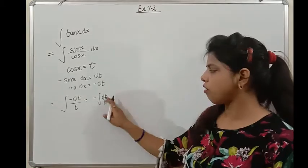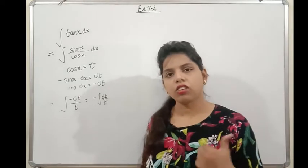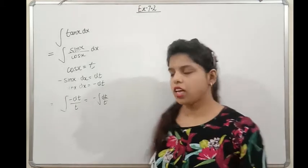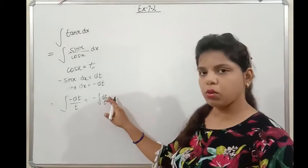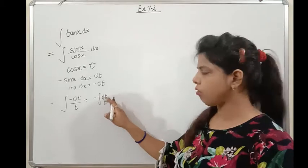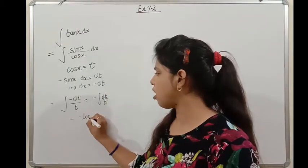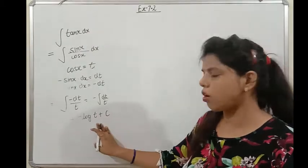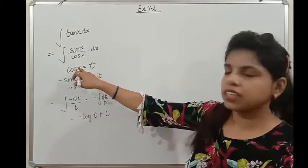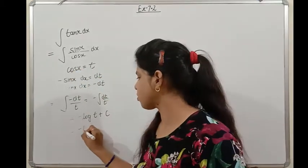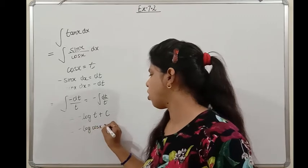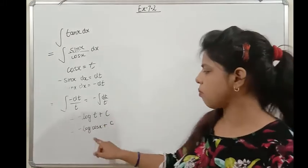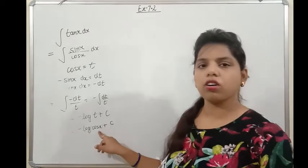The integration of 1/x is log x, because the derivative of log x is 1/x. Similarly, the integration of 1/t with respect to t is log t + c. But since the original function is in terms of x, we put back the value of t. So the answer is −log|cos x| + c. We use modulus to ensure positive values, since log is not defined for negatives.